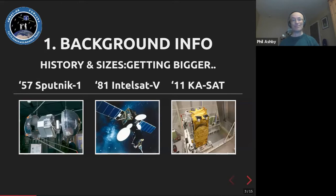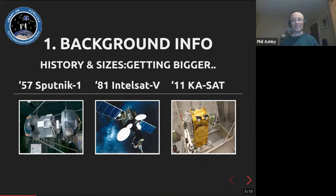KaSat is largely a data-focused broadband comms satellite. It's a 2.5m × 2.5m × 5.5m box — there are people up a ladder on the left side of the picture just to give you an idea of scale. It weighs six tons, the solar panels are 45 meters out, it produces 16 kilowatts, has 80-plus transmitters, and handles 90 gigabits per second of comms data in geostationary orbit at 35,000 kilometers away.